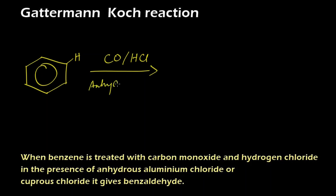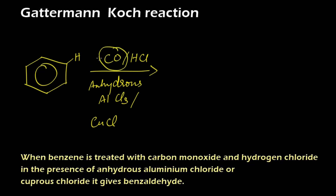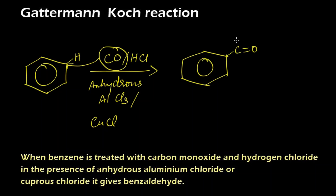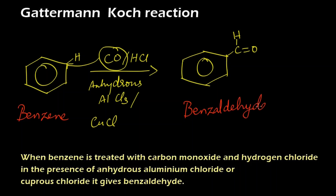The reaction takes place in the presence of anhydrous aluminium chloride (AlCl₃) or cuprous chloride (CuCl). The carbonyl group — carbon monoxide — gets attached to the benzene carbon, and the hydrogen gets attached to that carbon as well. This gives us benzaldehyde.